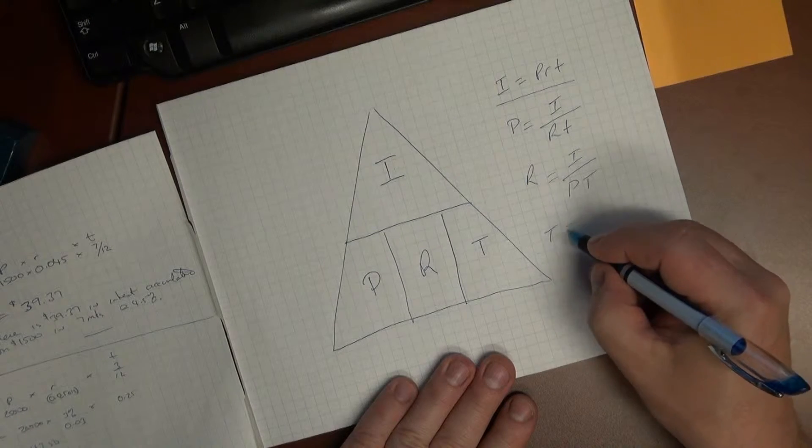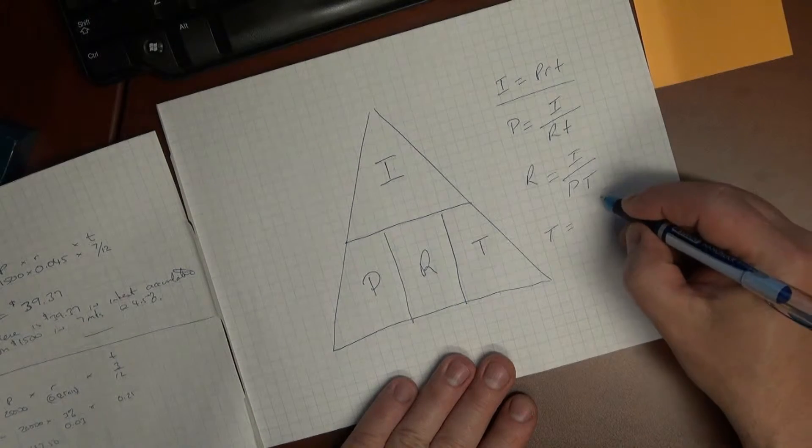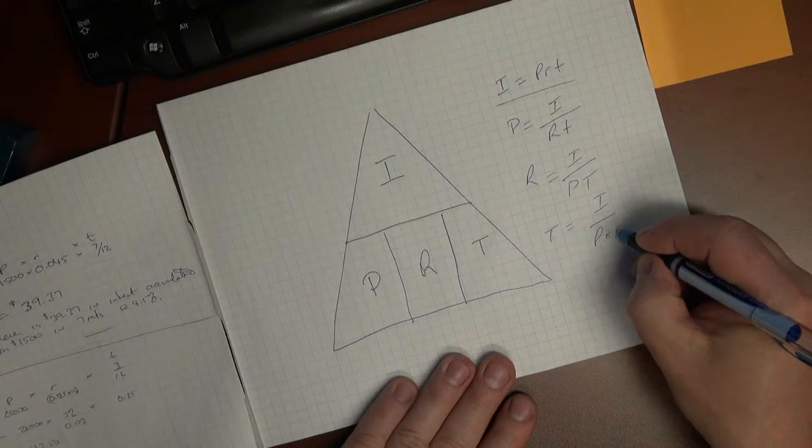And if we're looking for T, which is time, the formula would be I over P times R.